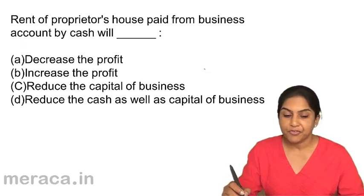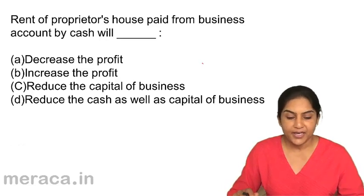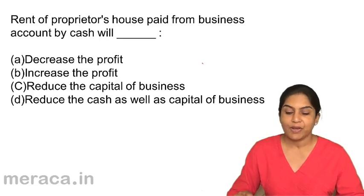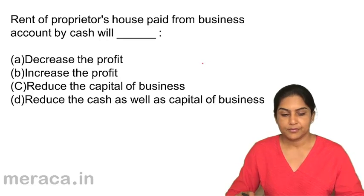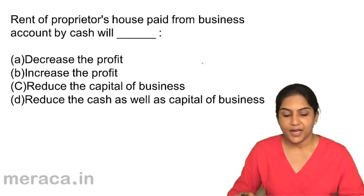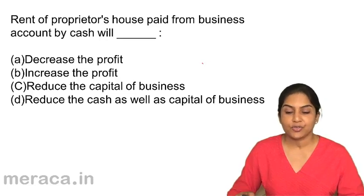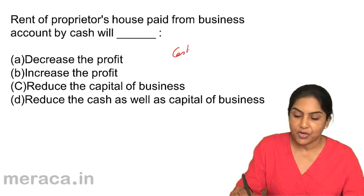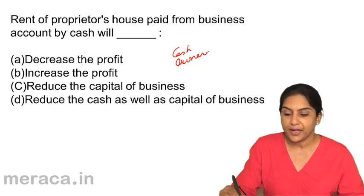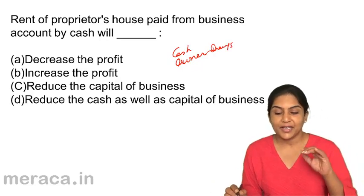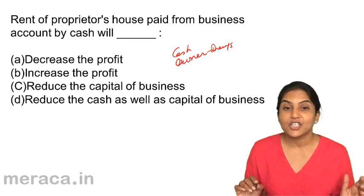Next question: Rent of the proprietor's house paid from the business account by cash will — A: decrease the profit, B: increase the profit, C: reduce the capital of the business, D: reduce the cash as well as capital of the business. What are the accounts involved? Cash is involved and the owner's account. Money is being paid for the owner — it's like a drawing. So is there a decrease in profit? Frankly, there is no expense or income involved.